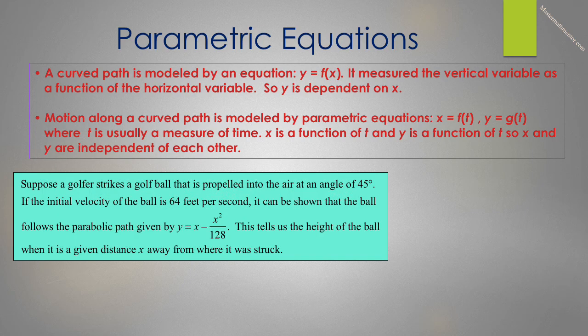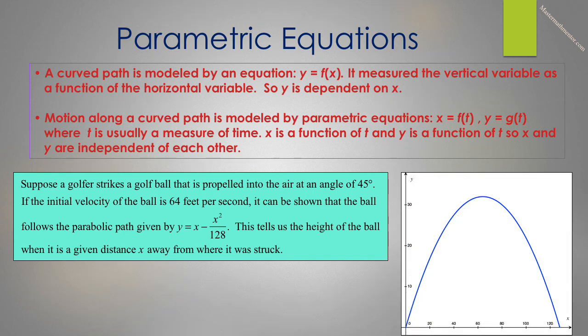Let's look at an example. Suppose a golfer strikes a golf ball that is propelled into the air at an angle of 45 degrees. If the initial velocity of the ball is 64 feet per second, it can be shown that the ball will follow the parabolic path given by y equals x minus x squared over 128. This tells us the height of the ball when it is a given distance x away from where it was struck. We can see that the ball goes approximately 130 feet and gets approximately 32 feet high. But we have no idea how long this takes. Time is not measured here.